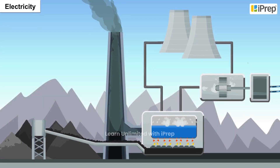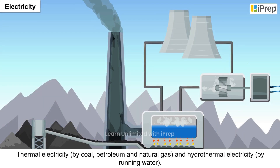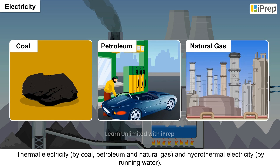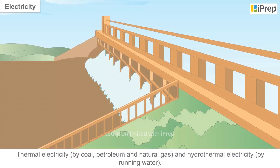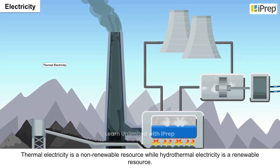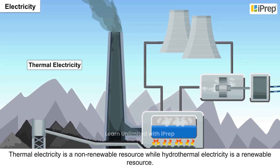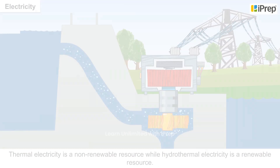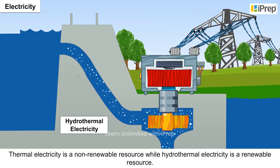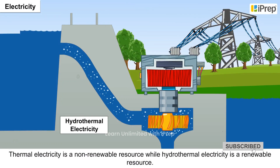Electricity. It is generated by two ways: thermal electricity, produced by coal, petroleum, and natural gas; and hydrothermal electricity, generated by running water. Thermal electricity is a non-renewable resource, while hydrothermal electricity is a renewable resource.